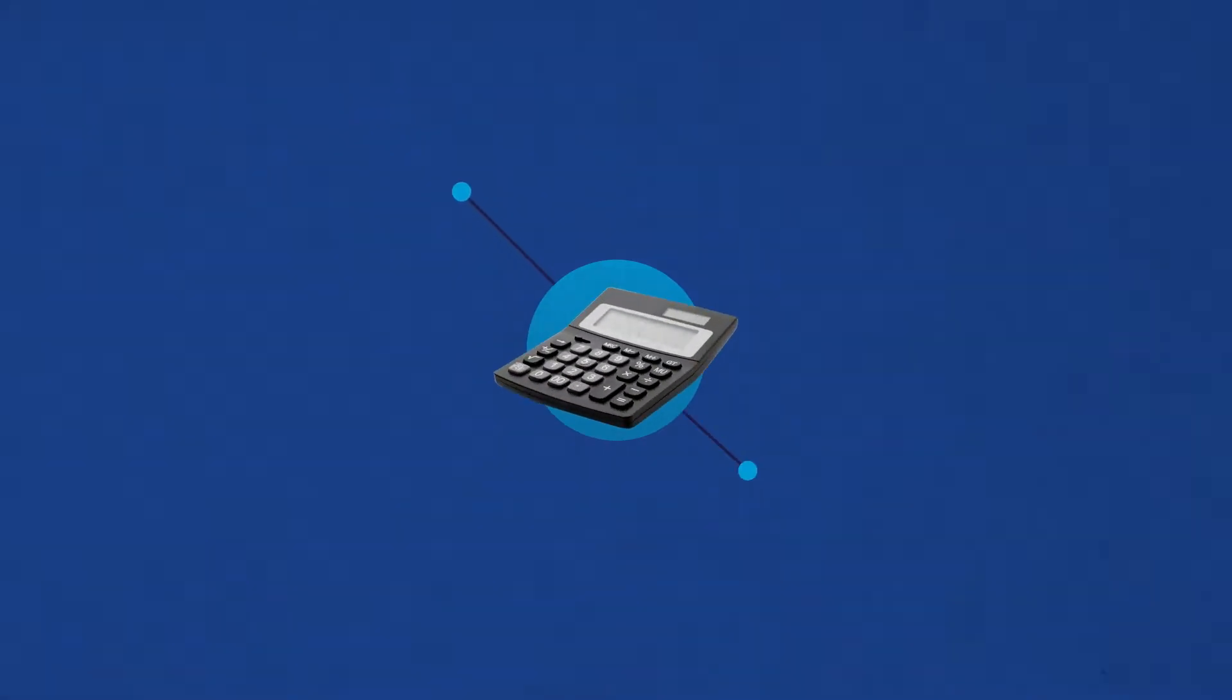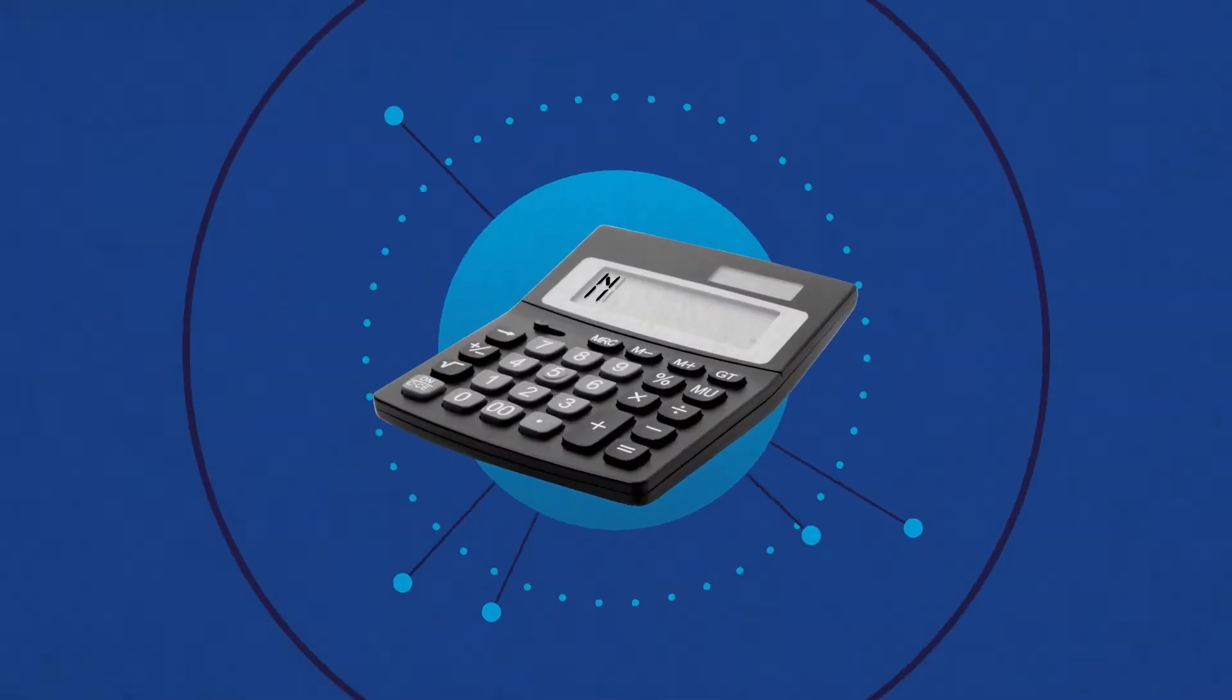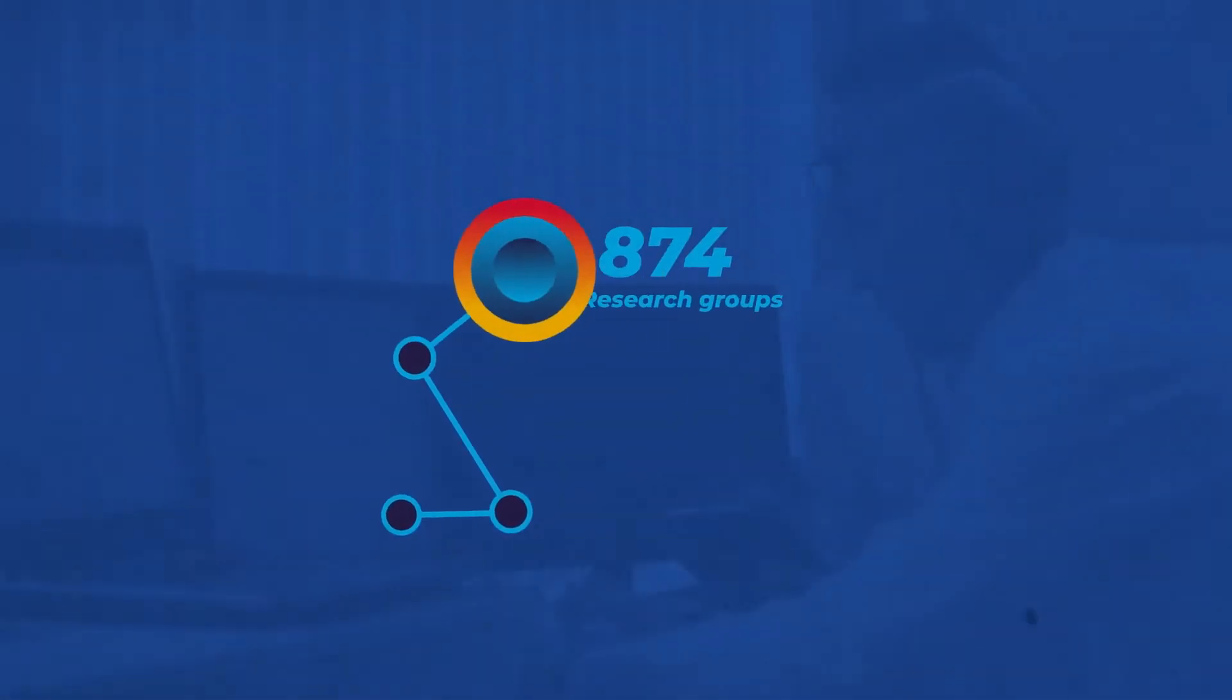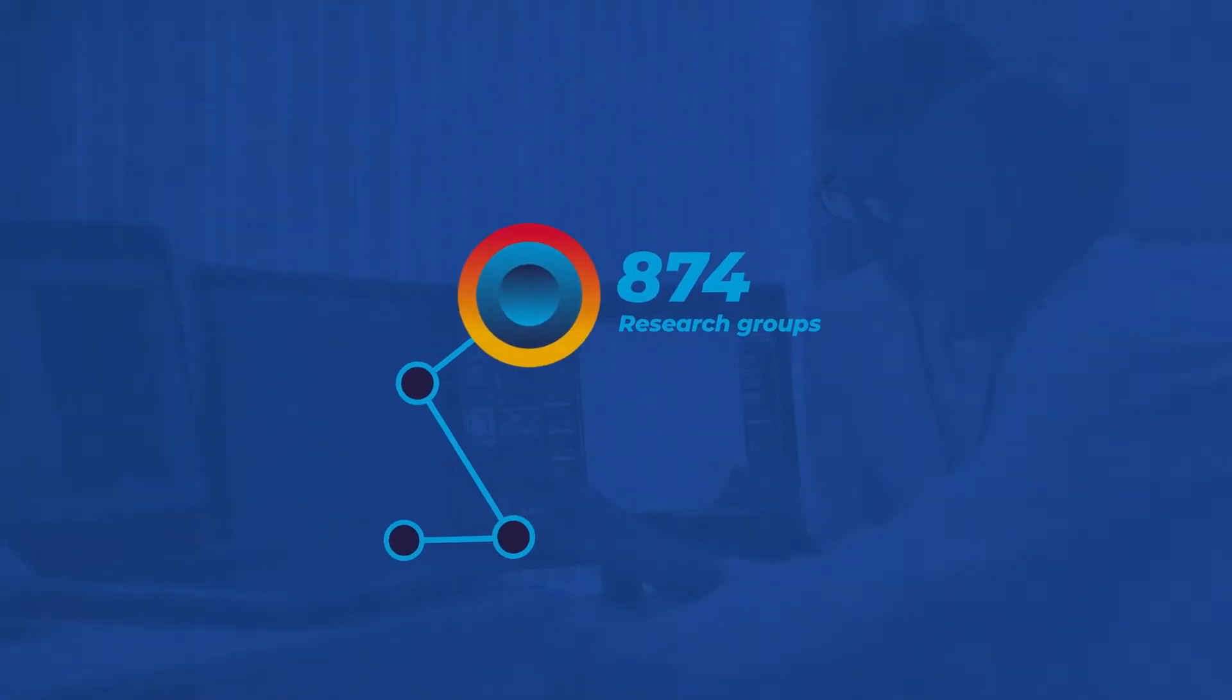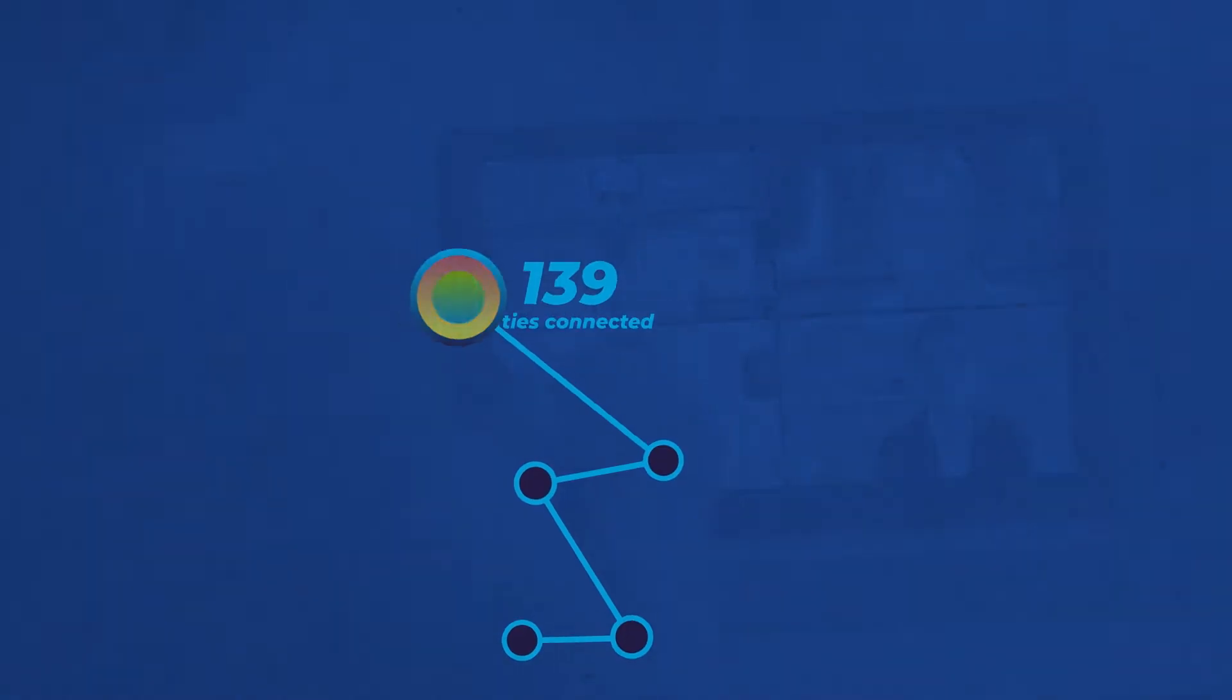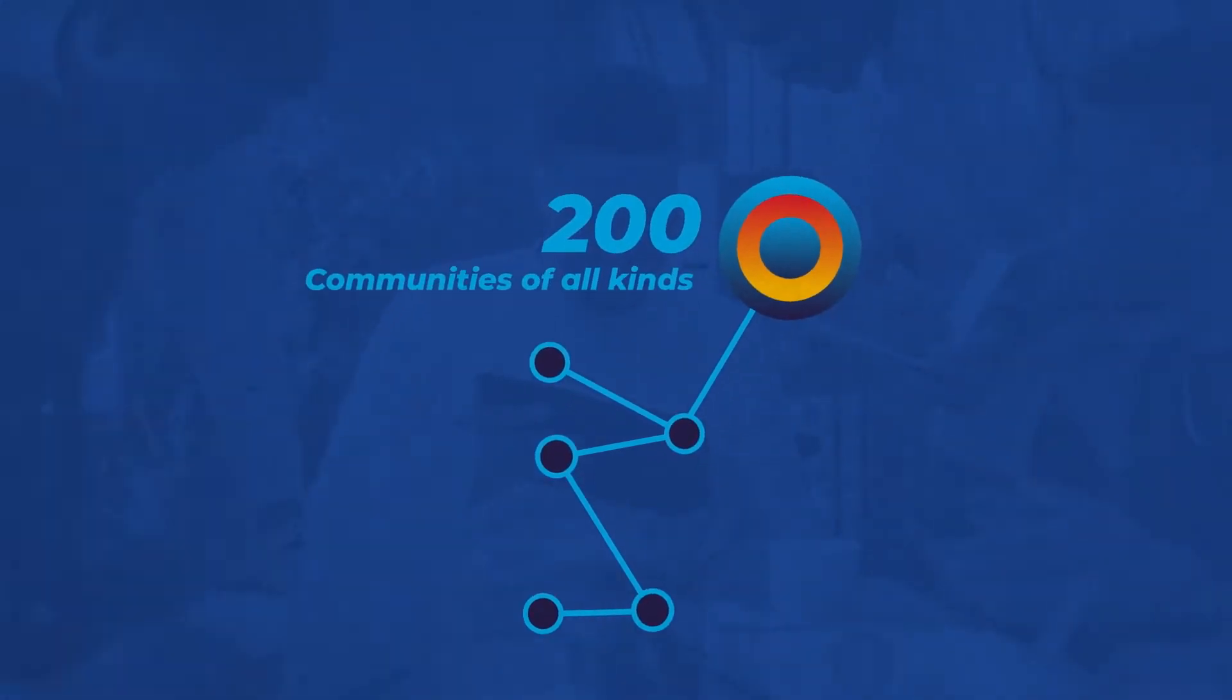All these concepts are great, but wait until you hear the numbers. Almost 300,000 students, 23,700 academic staff, 17,800 support staff, 874 research groups, 139 faculties connected through 200 communities of all kinds.